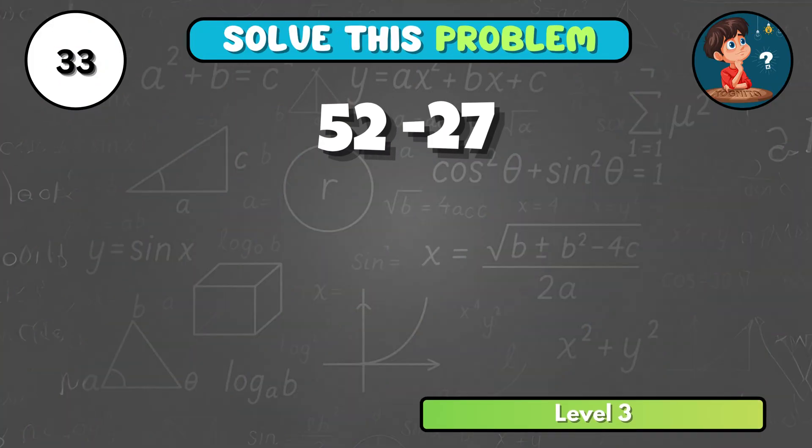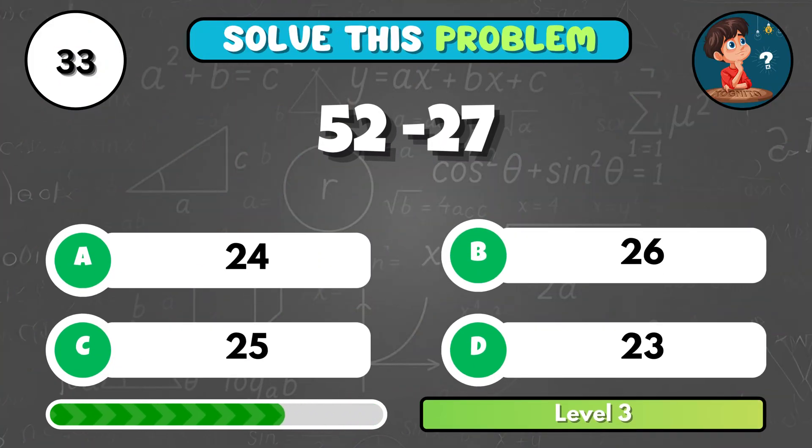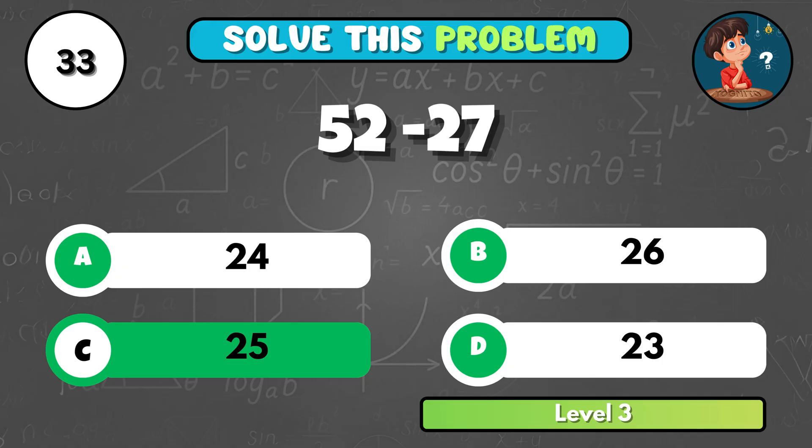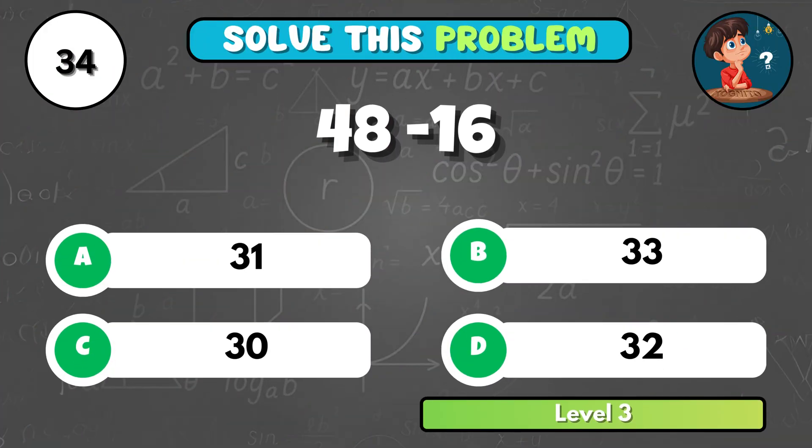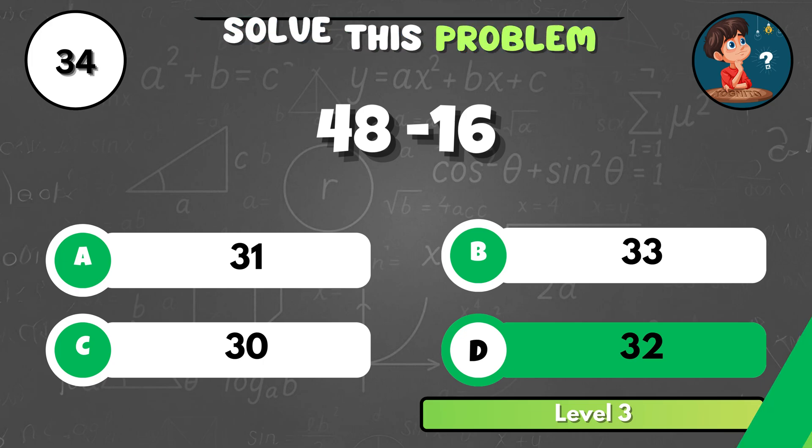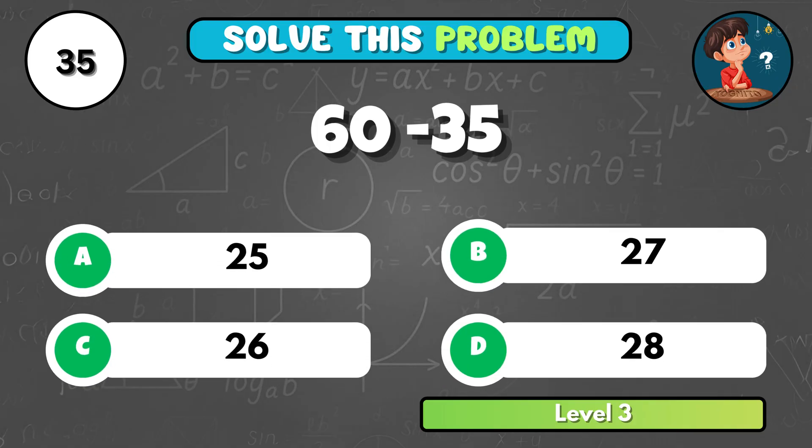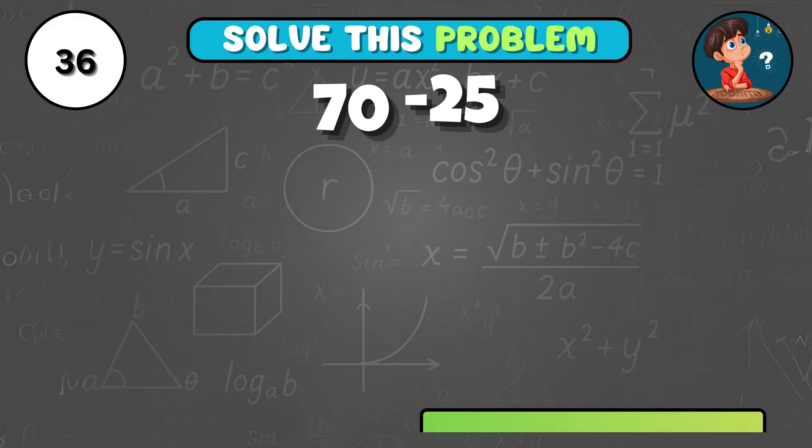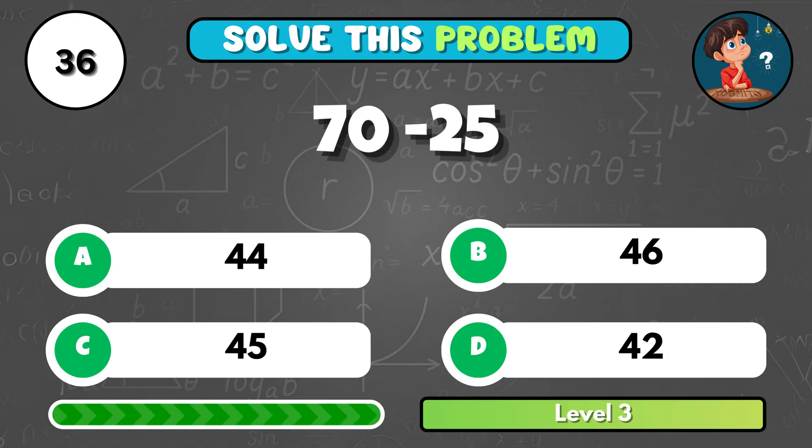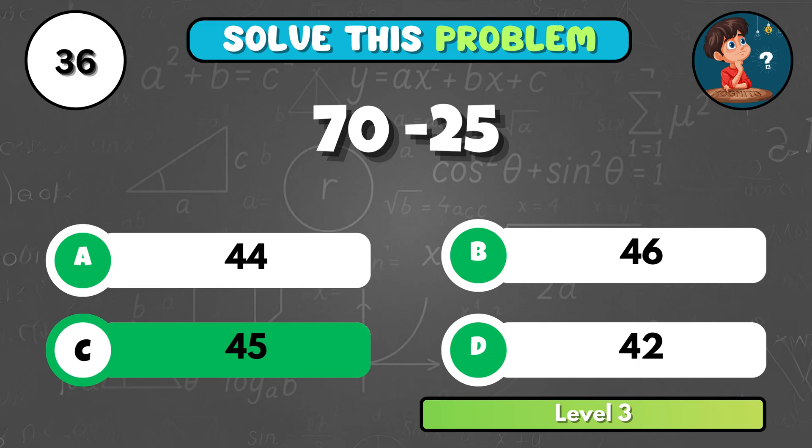What's the result when 52 minus 27? That's C, 25! Moving on, 48 minus 16 equals... It comes to D, 32! Solve this, 60 minus 35 is how much? That's A, 25! 70 minus 25 equals what? It equals C, 45!